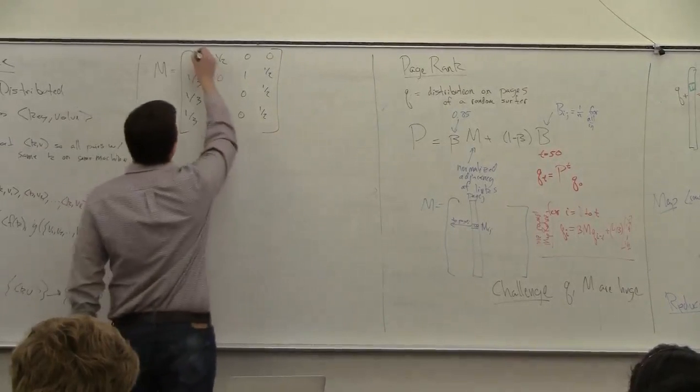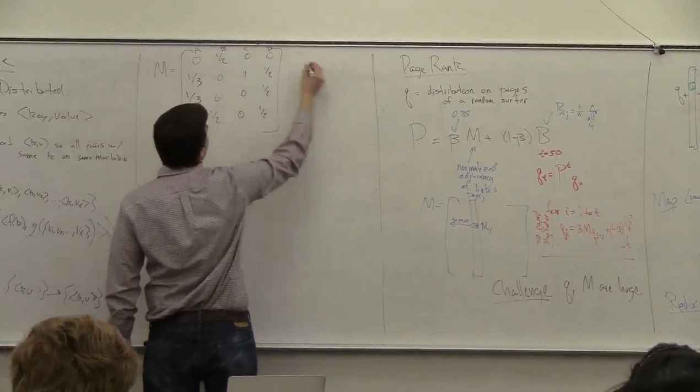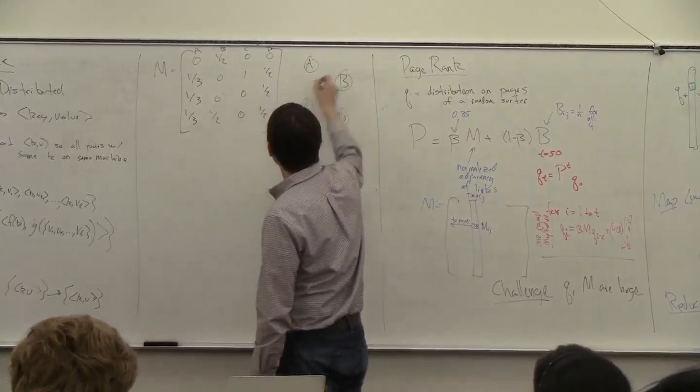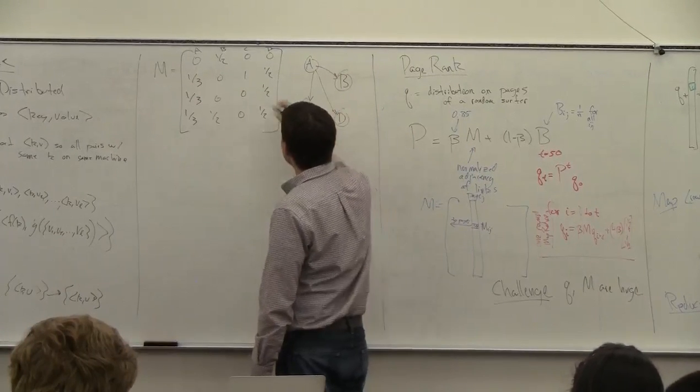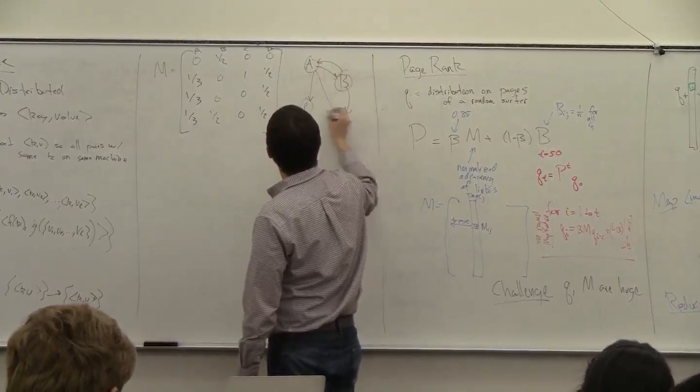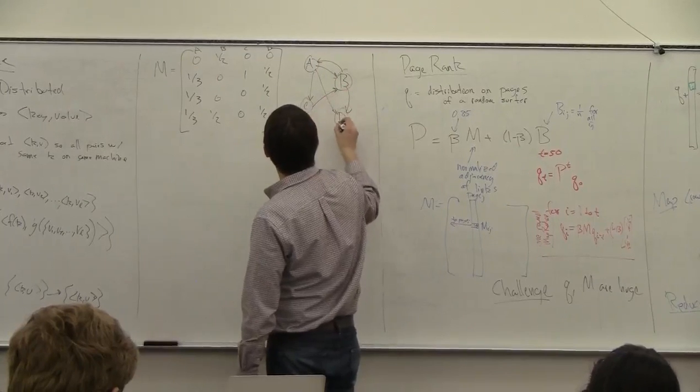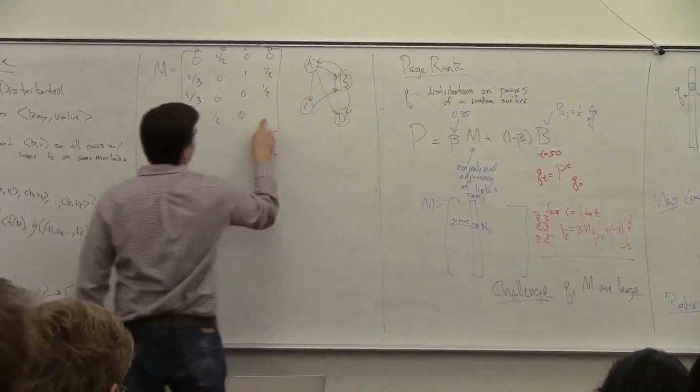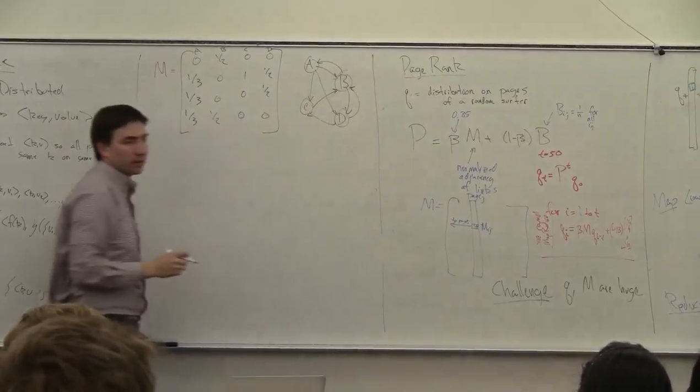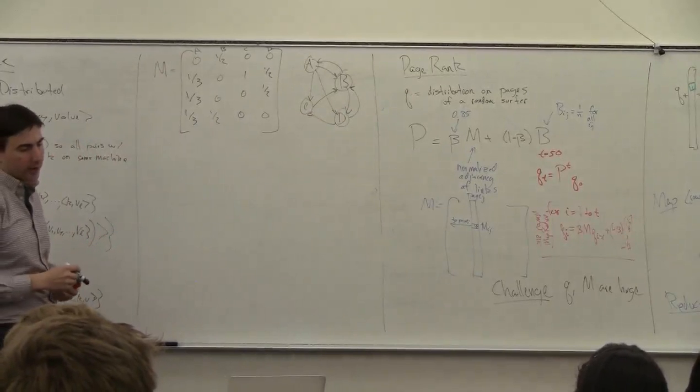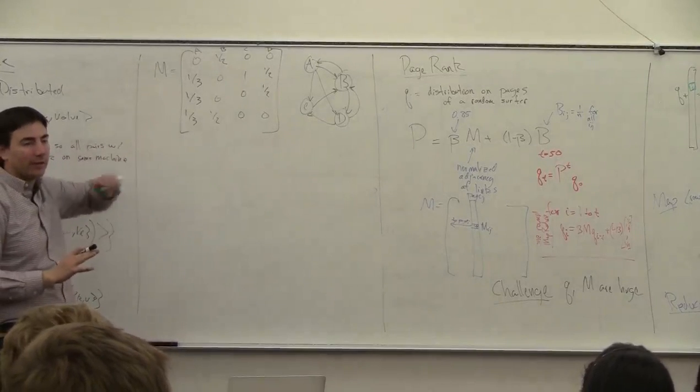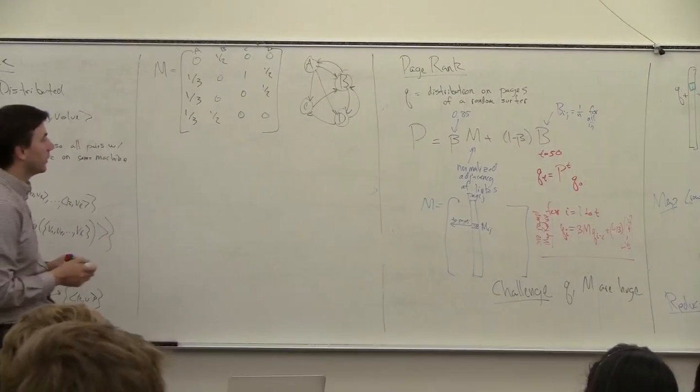All right, so this is going to be a simple graph, A, B, C, D, E. And so A is going to have links to B, C, and D. B is going to have links to A and to D. C will only have a link to B. And D will have a link to B and to C.